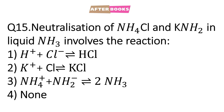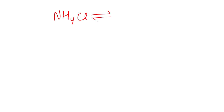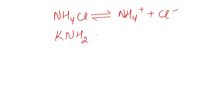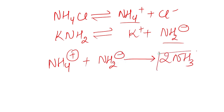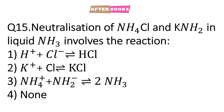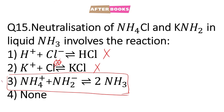Question number 15: Neutralization of NH4Cl and KNH2 in liquid ammonia involves the reaction. NH4Cl forms NH4⁺ + Cl⁻, and KNH2 forms K⁺ + NH2⁻. NH4⁺ and NH2⁻ combine to form ammonia — which, if seen in reverse, is the self-ionization of ammonia. The reaction occurring here has no Cl⁻ involved, so option number 3 is the correct answer.